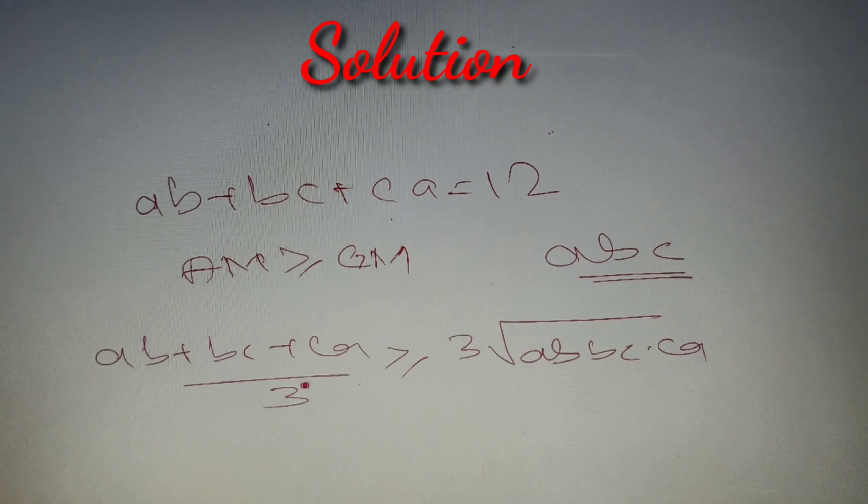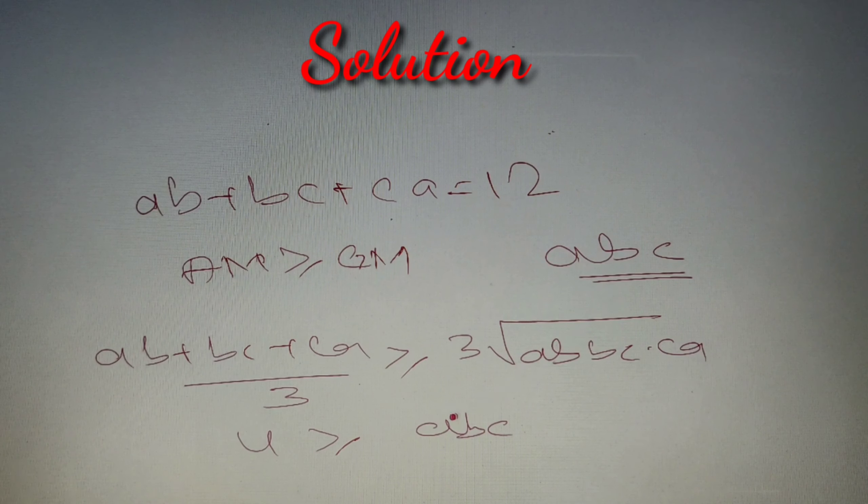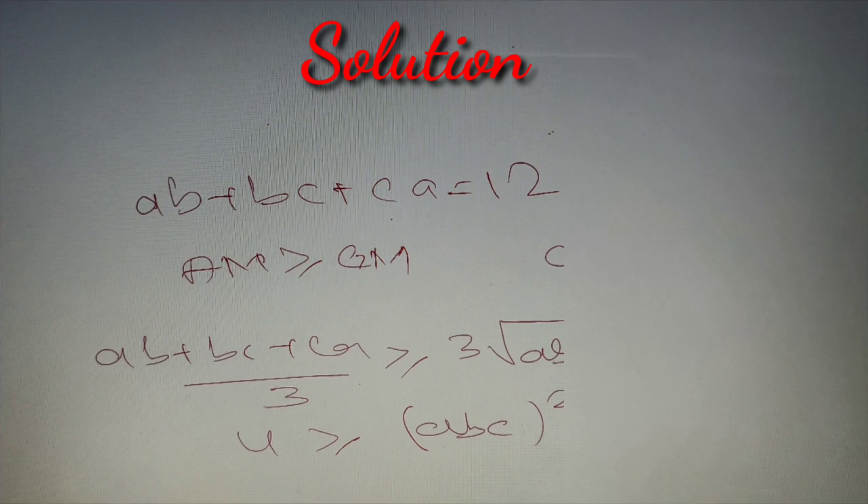So we'll put that value and 12 divided by 3 is simply equal to 4, and ab × bc × ca is simply equal to abc whole square. So we have got abc whole square and that raised to power 1/3, so we have got abc raised to power 2/3.